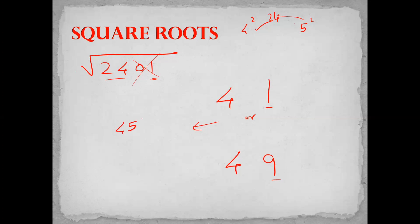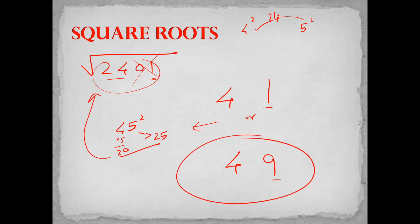The final step is to check the square of 45: 5²=25 and 4 into 5 which is 20, so 45²=2025. 2025 is clearly less than 2401. That means 2401 is the square of a number greater than 45. Our answer will be 49. Done.